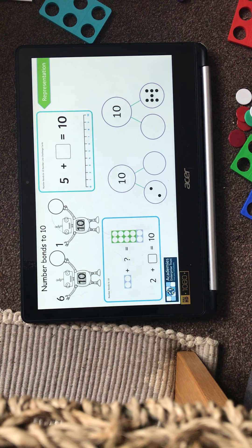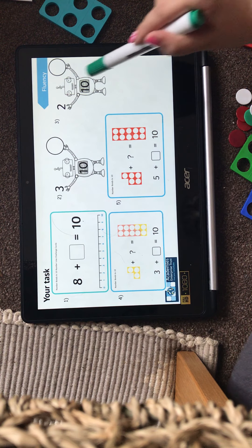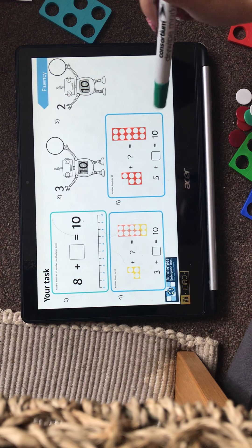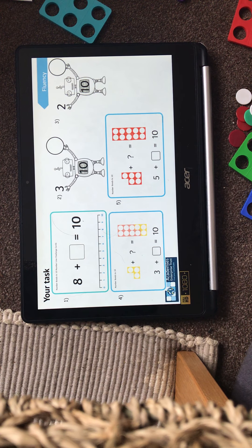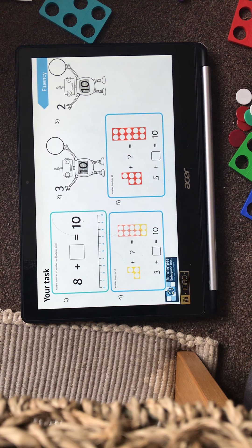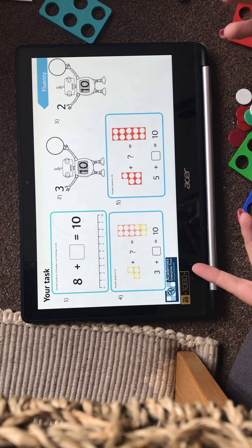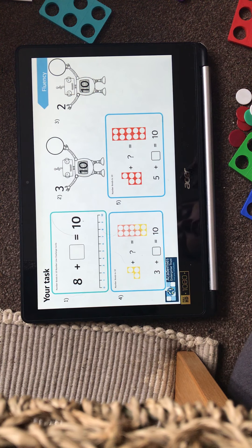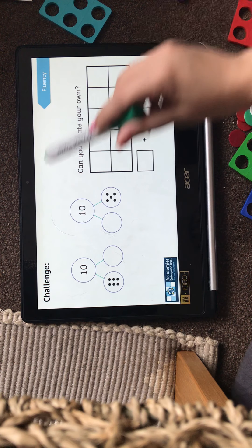So what you're going to do is you have some challenge cards. You have 5 challenge cards there. And what I'd like you to do is complete these questions onto your squared paper. Now use the resources to help you. So draw a number line. If you need to draw your circles to help you work out, do it. You need to convince me and you need to show me how you know.